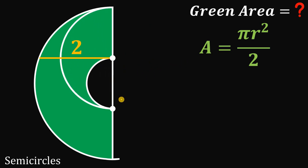In this transformed figure, we can now easily find the area of the green region. It is simply the difference between the area of the big semicircle minus the area of the small semicircle.